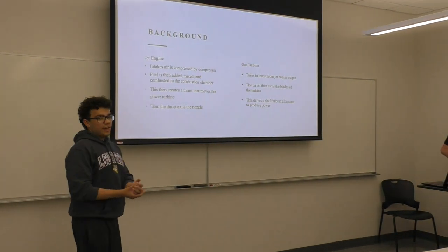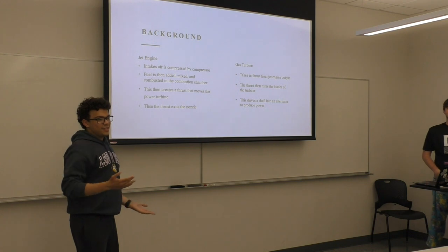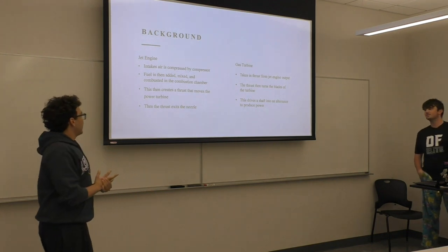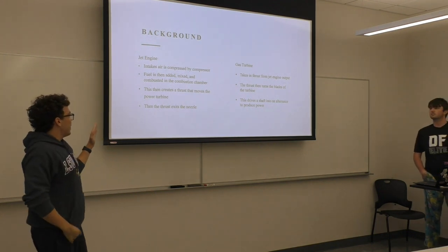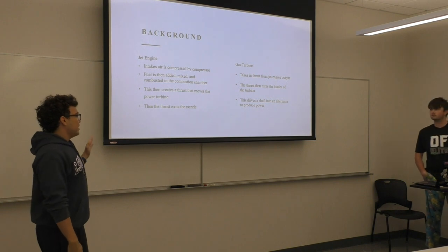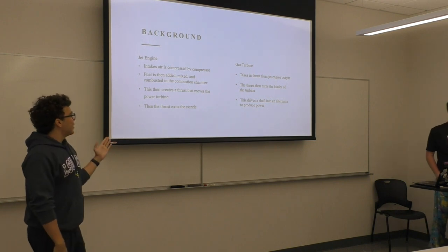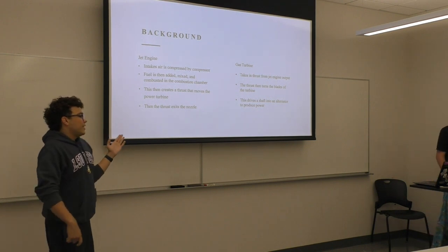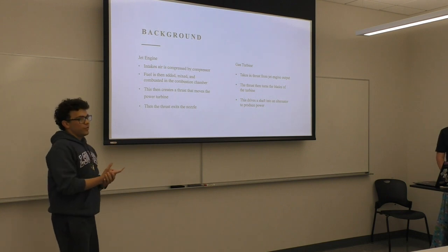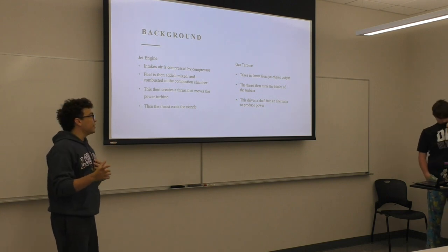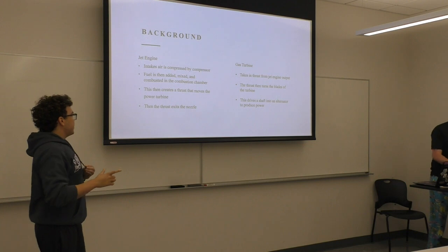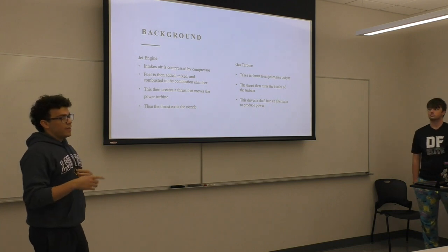A little bit of the background for the Jet Engine. It basically consists of two turbines. The first part is the Jet Engine, and it's operated like it intakes air to the compressor. And then the next stage it adds a little bit of fuel. The fuel for this one, I think, is kerosene. And then that leads to the combustion chamber. And then it combusts.